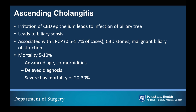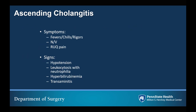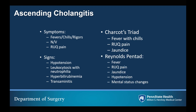In cases of severe ascending cholangitis, the mortality rate approaches a third, with 20–30% of patients dying from this disease process. Patients will present with fevers, chills and rigors, nausea and vomiting, right upper quadrant abdominal pain, hypotension, leukocytosis with neutrophilia, hyperbilirubinemia, and transaminitis. Charcot's triad should always tip you off for ascending cholangitis: fever with chills, right upper quadrant abdominal pain, and jaundice. Reynolds' pentad is associated with more severe cases, consisting of Charcot's triad plus hypotension and mental status changes.